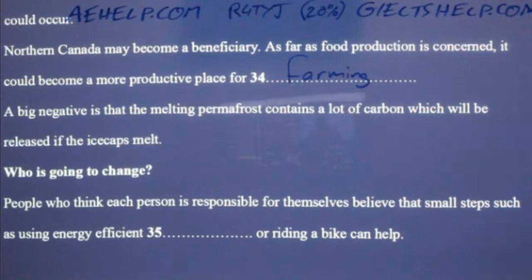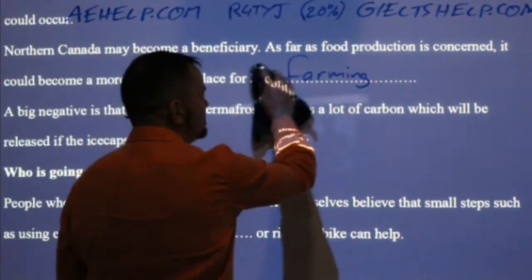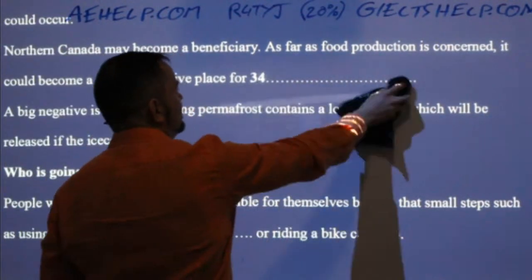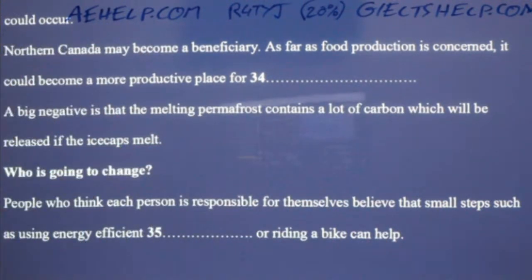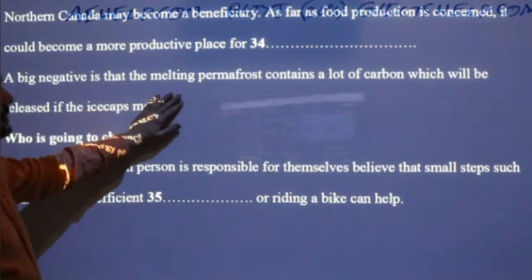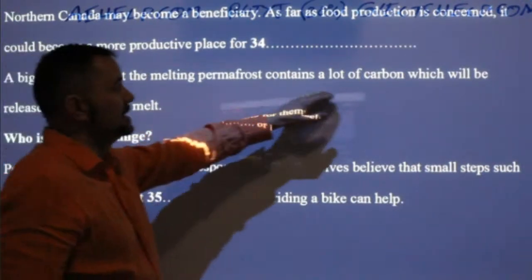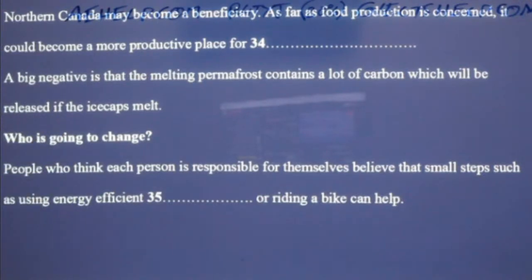I saw it with my own eyes — I was eating tomatoes grown naturally outdoors in Northern Canada. A big negative is that the melting permafrost contains a lot of carbon, which will be released if the ice caps melt.